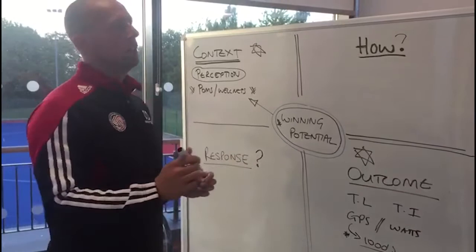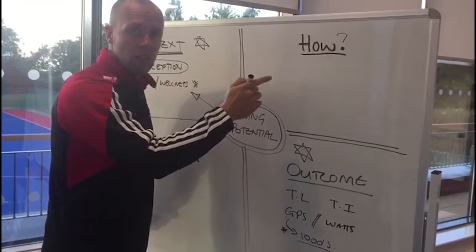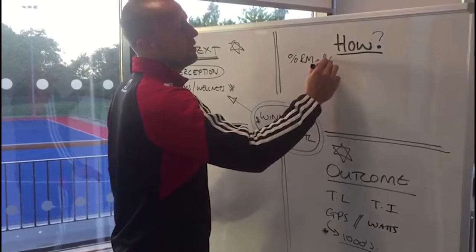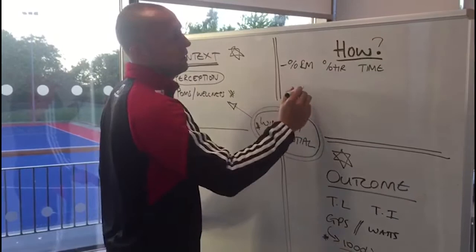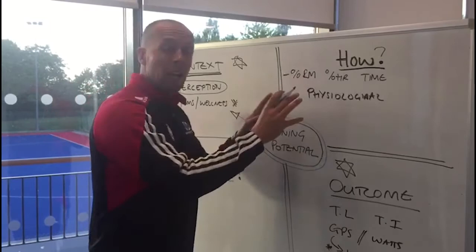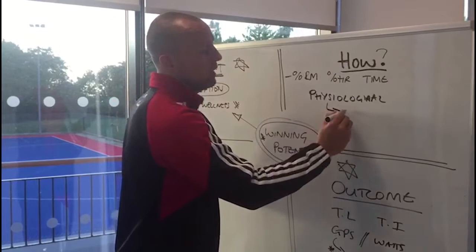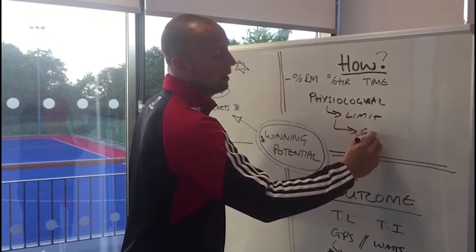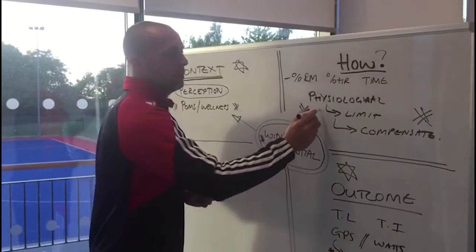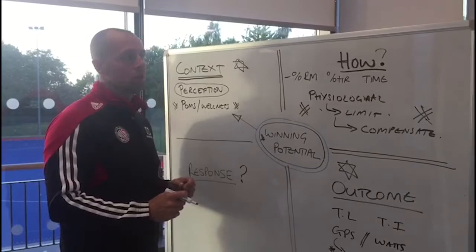There are two points on the board which are empty right now but hold massive value. One is the 'how' column — how are our athletes achieving the speed, the strength, the endurance that we see? We're going to move away from fixed percentage ideas, like fixed percentage RMS or fixed percentage heart rates or recovery intervals of time, and instead use real-time physiological monitoring. What I'm really interested in is: what is their limit to performance, and if I push them past that limit, how do they compensate? If I can harness that information, I can really get to know my athletes better and work on their limiter to gain more margin in winning potential.